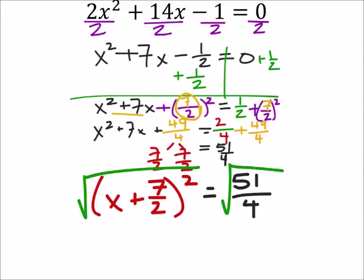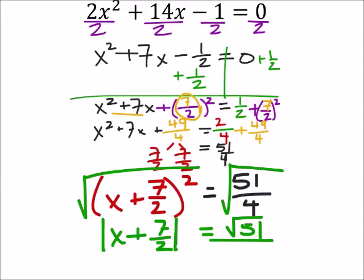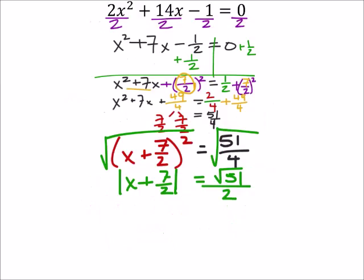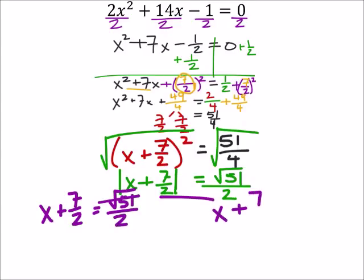We're going to square root both sides of this thing. And we get the absolute value of x plus 7 halves, which is going to equal, I'm going to simplify this. Square root of 51, no good. The square root of 4, though, is 2. Now let's go ahead and split this up. So over here, I've got x plus 7 halves equals the square root of 51 halves. And then over here, we've got x plus 7 halves equals the negative square root of 51 halves.